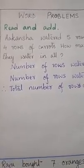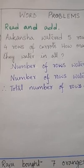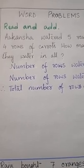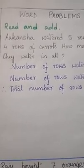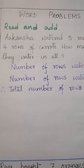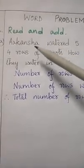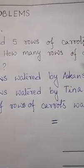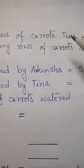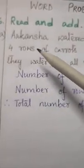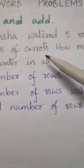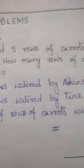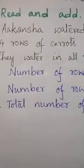Let's read the question very carefully and try to frame the statement according to the question. Akansha watered five rows of carrots. Tina watered four rows of carrots. How many rows of carrots did they water in all?